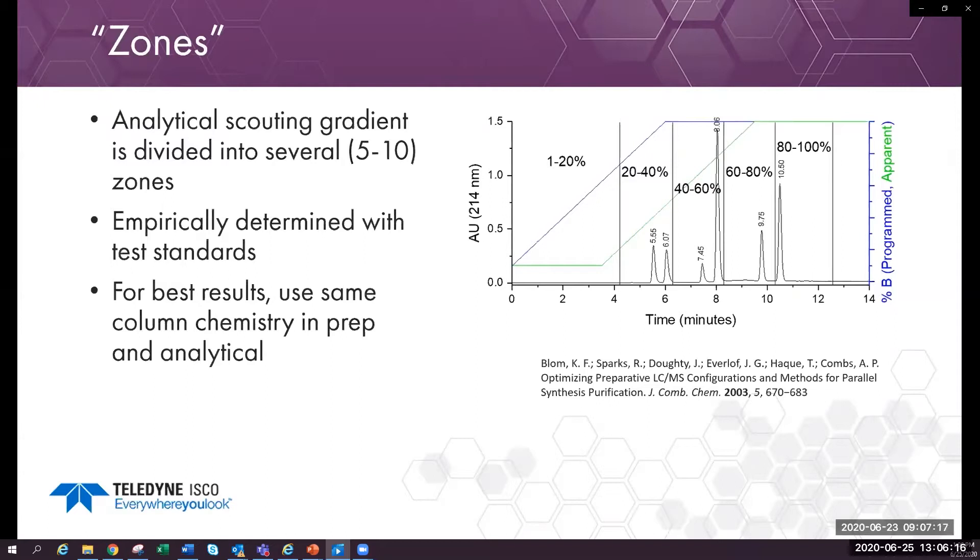You need to set up five methods for each column on the prep system. Ionizable compounds at the ends of the zone may be problematic because they may not elute when expected. This problem is common to all calculated gradients and we will discuss this later.